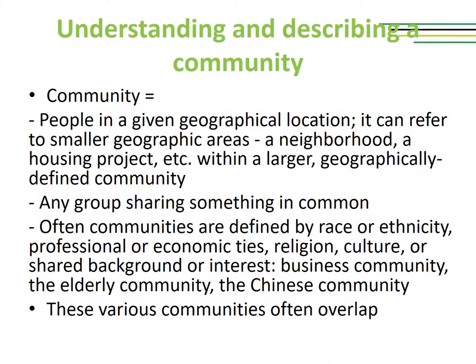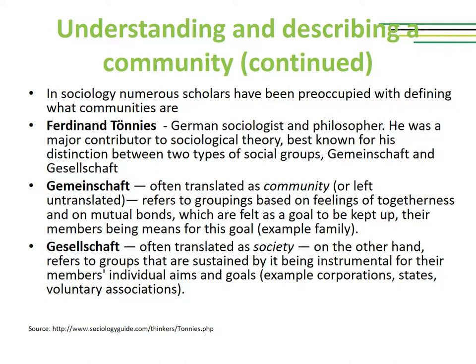Of course, these various communities often overlap. As I was telling you, the idea of what communities are has preoccupied scholars in various disciplines, and mainly sociology, for a very long time. On this slide, I included a definition by a German sociologist and philosopher, Ferdinand Tönnies. He was a major contributor to sociological theory, and he was mainly known for the distinction between two types of social group: Gemeinschaft and Gesellschaft. These concepts are often not translated in other languages because translation is difficult.